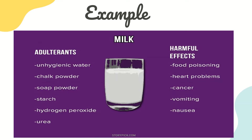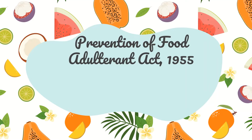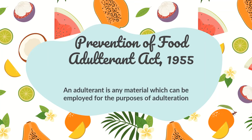There are many examples of food adulteration in day-to-day life. Under the Prevention of Food Adulteration Act of 1955, an adulterant is any material employed for the purpose of adulteration — which is added to or removed from food products. There are nine laws defined under this Act which we will discuss further.